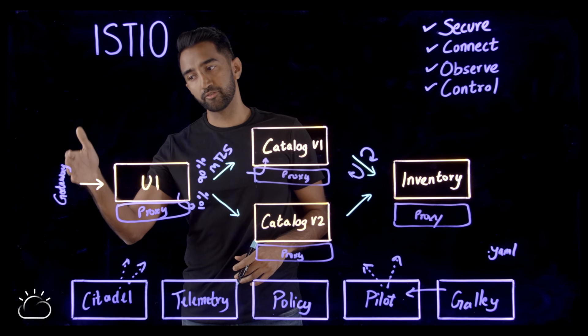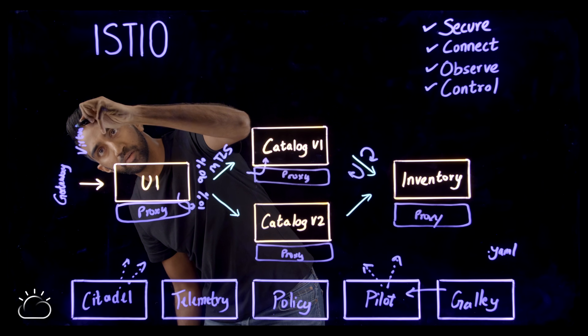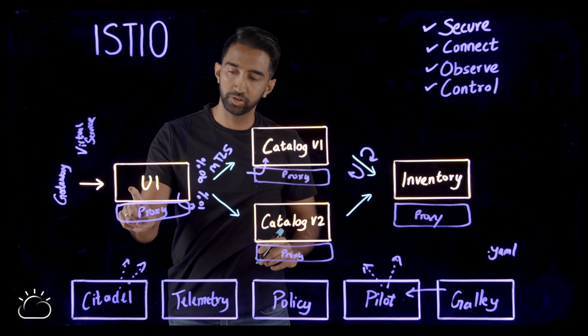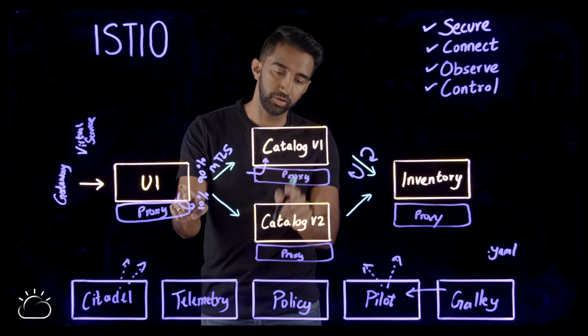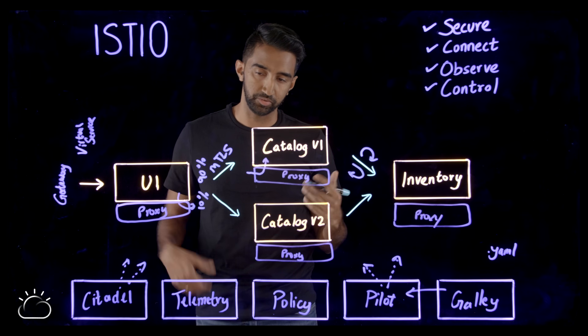Next, to direct traffic from gateway to your services, you create a virtual service. And a virtual service can be bound to a gateway and direct traffic to UI, or it could be bound to a service and then direct traffic to your other services where you can apply policies like 90% and 10% traffic split rules.